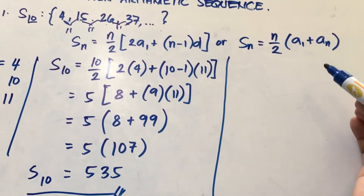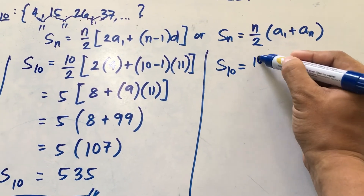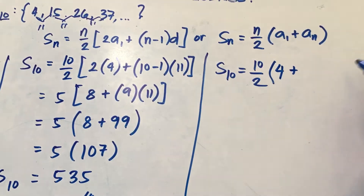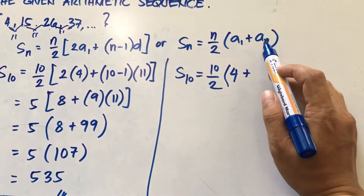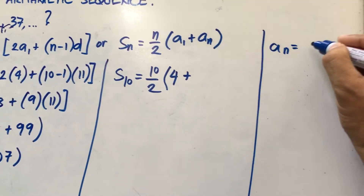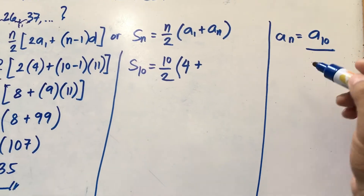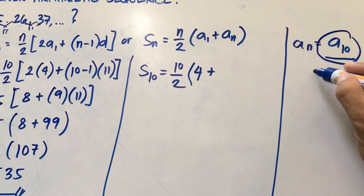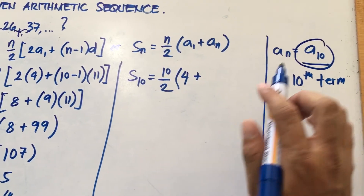We will now check if we still arrive at the same answer using the second formula. S sub 10 equals N over 2, so you have 10 over 2, times A sub 1 plus A sub n. Your A sub 1 is 4. Now, how do you get A sub n? Since N is 10, your A sub n is A sub 10. We need to find the 10th term of the sequence first before we can solve for the arithmetic series.